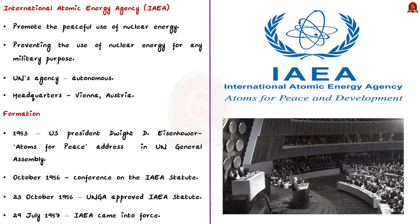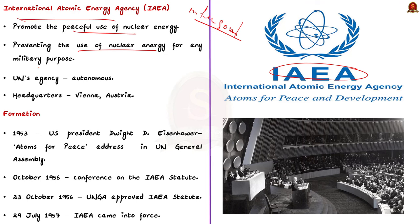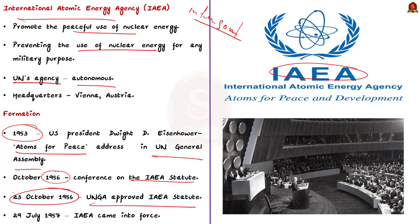Our next topic is the International Atomic Energy Agency (IAEA). It is an intergovernmental organization that seeks to promote the peaceful use of nuclear energy and prevent its use for military purposes, including nuclear weapons. It is one of the agencies of the United Nations. In 1953, the then US president proposed the creation of IAEA in his Atoms for Peace address to the UN General Assembly. In October 1957, a conference on the IAEA statute was held at the UN headquarters. The statute was approved on 23 October 1956 and came into force on 29 July 1957, formally establishing the IAEA.